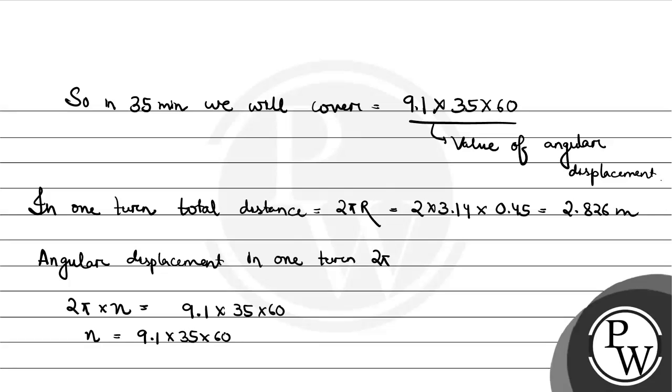Dividing by 2 into 3.14, we can get 3043 number of turns. So in 3043 turns, moving 2.826 meters per turn, we can find the total distance covered.